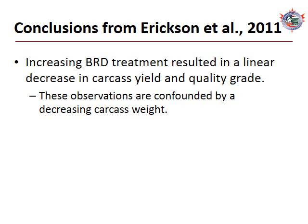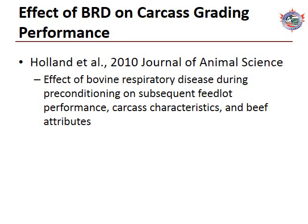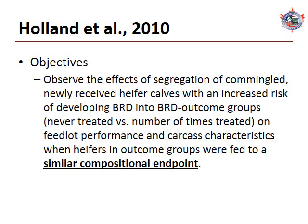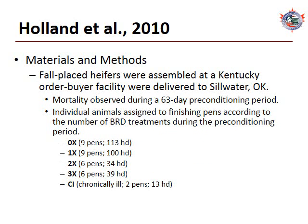Holland and others published a paper in the Journal of Animal Science titled Effect of Bovine Respiratory Disease During Preconditioning on Subsequent Feedlot Performance, Carcass Characteristics, and Beef Attributes. The objectives were to observe the effects of segregating based on BRD events during the preconditioning period on feedlot performance and carcass characteristics when heifers are fed to a similar market body weight. Fall-placed heifer calves were assembled at an order buyer facility in Kentucky and delivered to Stillwater, Oklahoma. For a 63-day preconditioning period, calves were observed for clinical signs of BRD, then placed into treatment categories of 0, 1, 2, and 3 treatments, with 13 animals categorized as chronically ill.